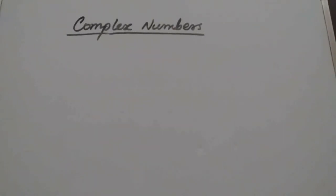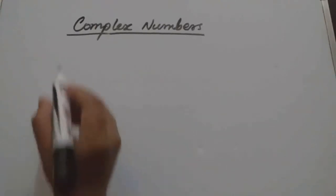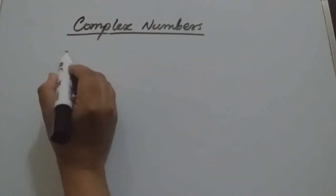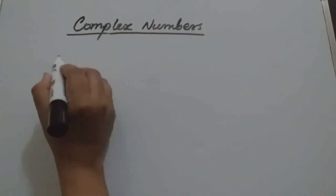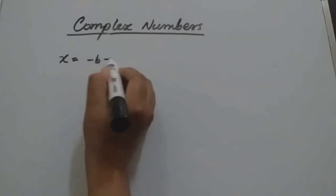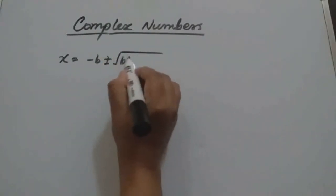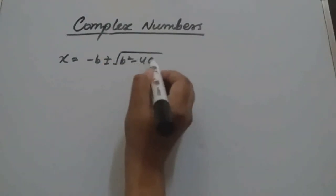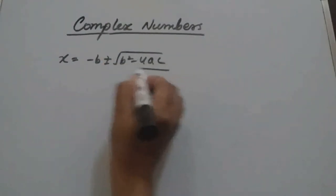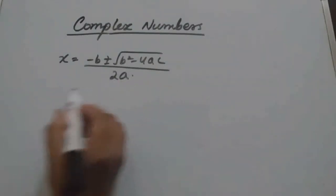In previous classes, that is class 10, we solved quadratic equations by formula method. The formula was: minus b plus minus root b square minus 4ac, divided by 2a.